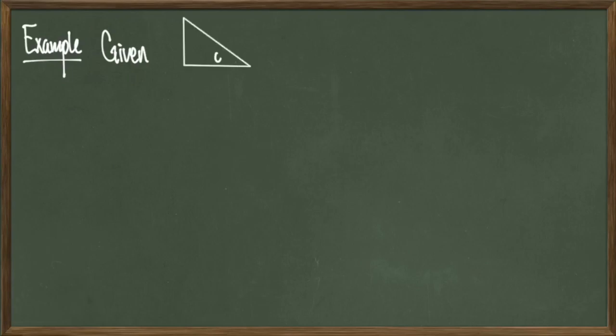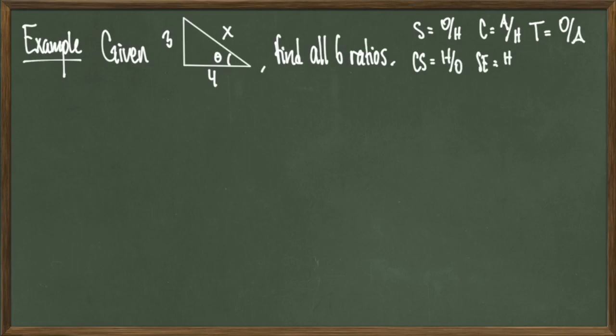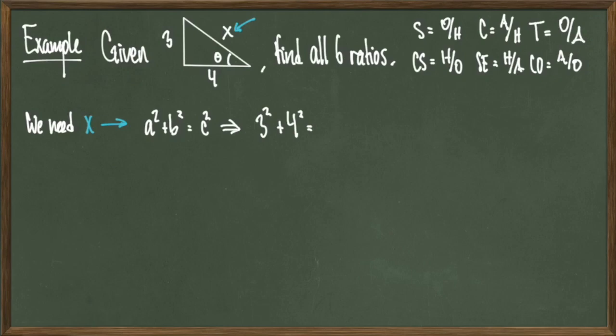Let's go ahead and do some examples. Given the triangle with legs 3 and 4 and an angle theta adjacent to 4, and a hypotenuse of x, find all six trigonometric ratios. So the first thing we need to do is figure out what x is. Finding x is just a direct result of the Pythagorean theorem, so when we square and sum both sides of the triangle, we get that x has to be equal to 5.